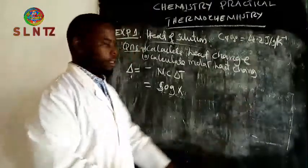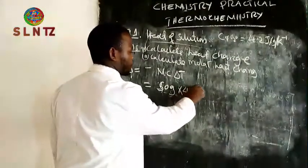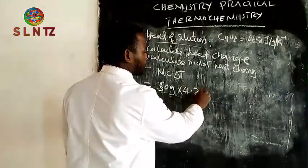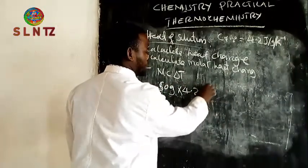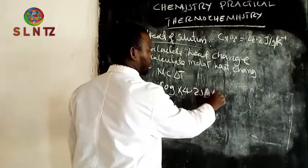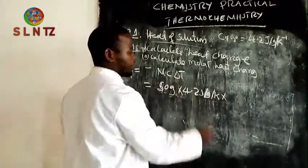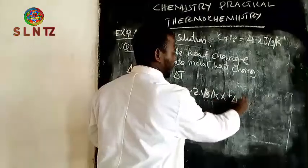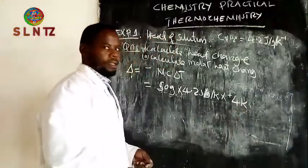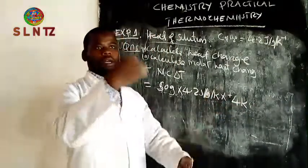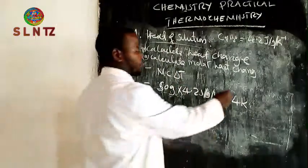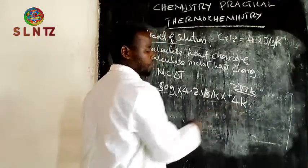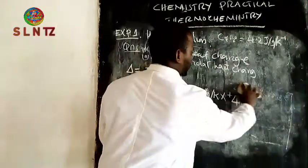So the specific heat capacity is 4.2 joules per gram per kelvin. The temperature change for the first experiment was positive 4 K and negative 2 K for the second. When you substitute into the formula with 50 grams, 4.2, and the temperature change, the sign of the heat change will depend on the sign of the temperature change.